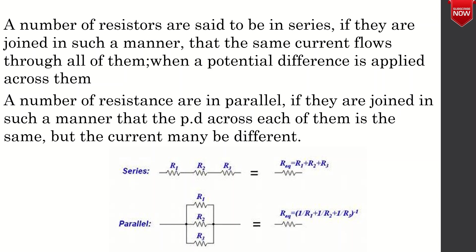As shown in the second figure, when R1, R2, R3 and more resistors are connected in parallel, the potential difference across all is the same but the current through each may be different.